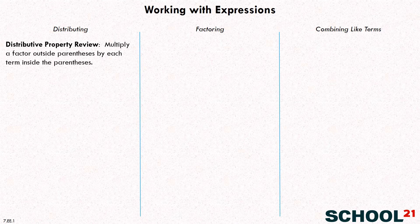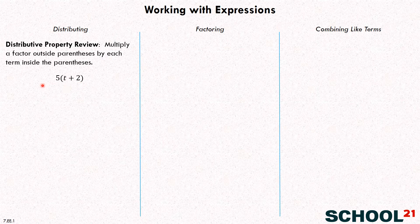You're going to multiply a factor that's outside parentheses by each term inside the parentheses. So here we have five outside the parentheses, and then how many terms do we have inside? Two. What's the first term? T. And what's the second term? Two. A term is just separated by a plus or a minus. So we have to multiply the five by each one of the terms. Let's draw some arrows to make sense — we have to multiply the five times T,